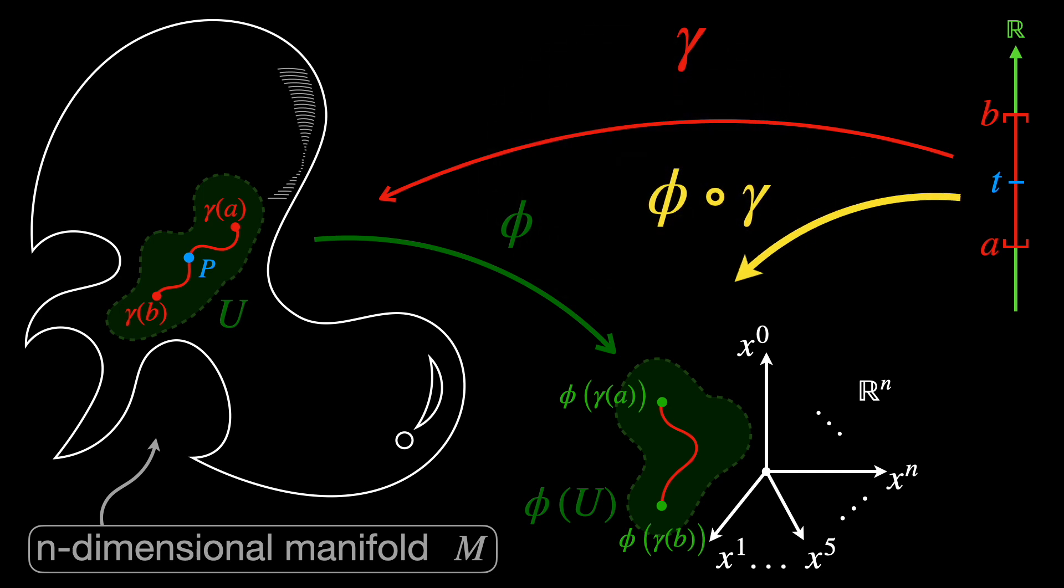Since we can create a composite mapping phi composed with gamma from the interval AB in the real line to Rn, we can also do calculus here, because this is a mapping from a one-dimensional Euclidean space to an n-dimensional Euclidean space. But what do we mean by do calculus? Well, we'll see it shortly, but first, some important remarks.